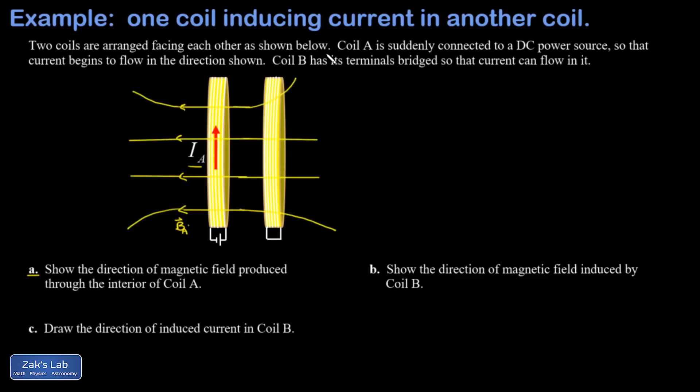And this is where we see why this is inducing a current in the second coil. As soon as we turn on coil A, we have a bunch of new leftward-pointing magnetic field going through coil B. Coil B is going to react to that.